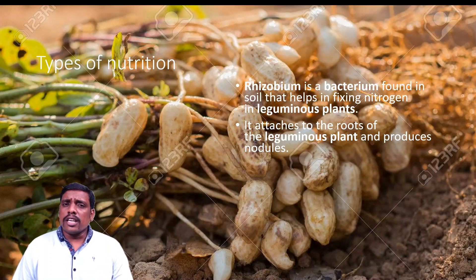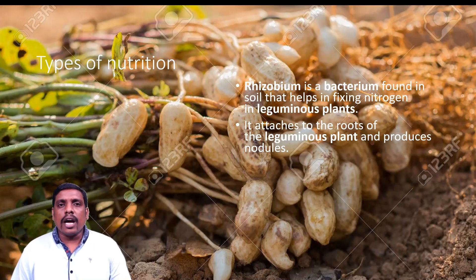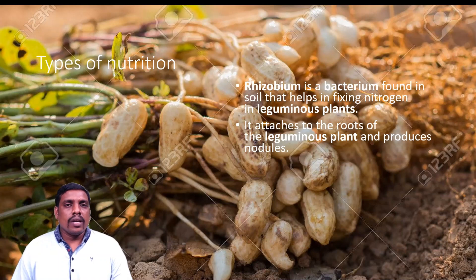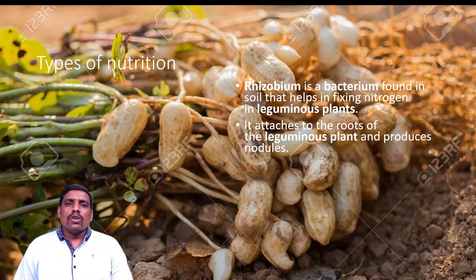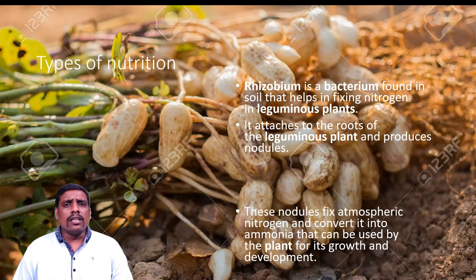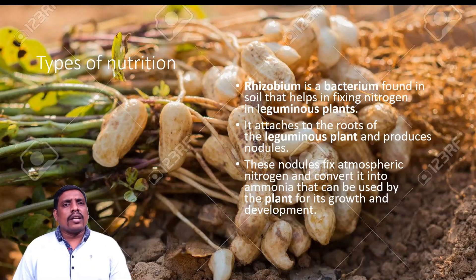Leguminous crops include groundnuts, green grams, black grams, and other leguminous crops. This Rhizobium bacteria lives in the root nodules of these plants and helps in the process of nitrogen fixation.